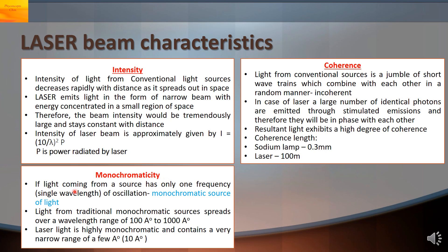Monochromaticity. If the light coming from a source has only one frequency or a single wavelength of oscillation, then we say the source is monochromatic. Light coming from a conventional source spreads over a wavelength range of 100 Armstrongs to 1000 Armstrongs.